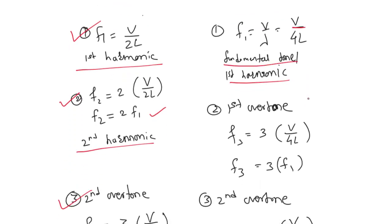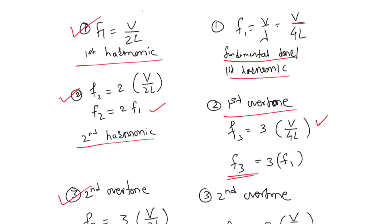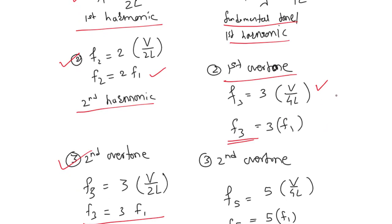The first overtone, or third harmonic, is given by 3f1, or 3(v/4L). You can see that there is no second harmonic that exists in the closed-ended pipe.